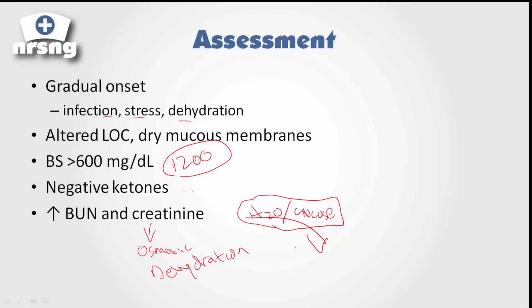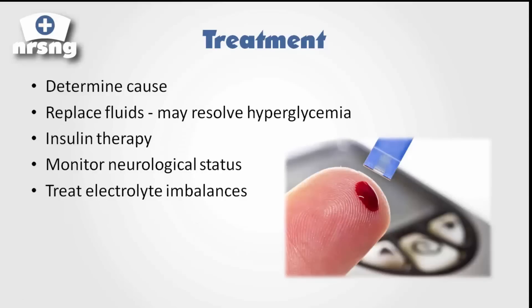We have this hyperglycemic state where we get so much sugar in the blood that it begins to cause all these symptoms. So what are we going to do? First, we want to determine the cause — is it an infection, stress? Can we reverse any of that? We want to replace fluids, which can help with the dehydration and also help with the hyperglycemia. As we begin to dilute the blood a little bit, we can help lower the blood sugar. We're also going to place the patient on intensive insulin therapy, checking blood sugars every hour, running fluids, monitoring neurological status, and treating electrolyte imbalances.